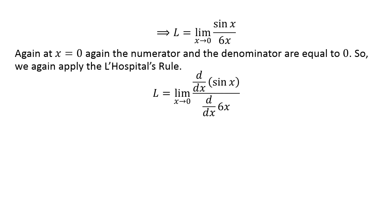Again, at x equals 0, the numerator and denominator are equal to 0, so we again apply L'Hospital's rule. The derivative of sin x is cos x, and the derivative of 6x is 6, giving us L equals the limit as x approaches 0 of cos x over 6.